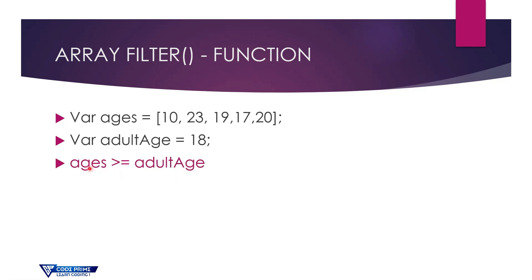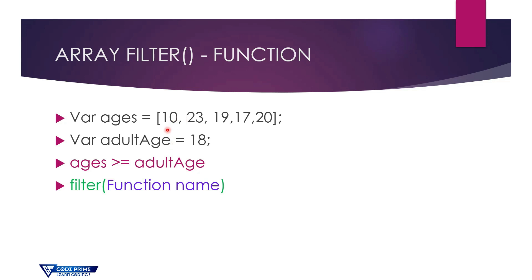So if the age is equal to 18 or bigger than 18, it will be passed into the array. The filter function will check each element in the array, and when it finds an element exactly matching the condition, it will take that element, create a new array, and print it out. We're going to do that practically.